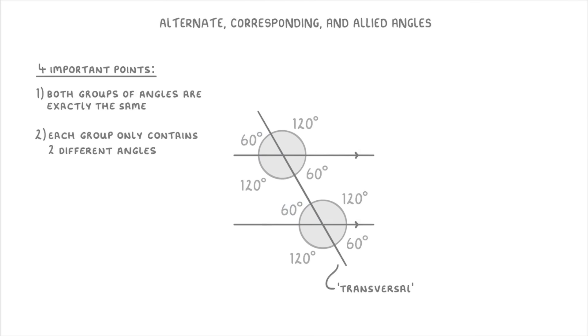The second point is that each group only contains two different angles. In this case, 60 degree angles and 120 degree angles. The third point is that the two different angles will always add up to 180 degrees. For example here, where our angles are 60 degrees and 120 degrees, these two add up to 180 degrees.